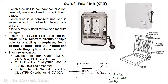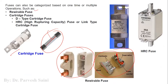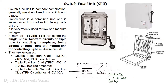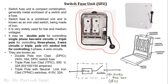Then we have the switch fuse unit. This is an HRC fuse — high rupturing capacity fuse — used in high rating circuits, while cartridge fuse is used in low power rating circuits. A switch fuse unit is basically a combination of fuse and a switch. In this box we have rewireable fuses installed, and we also have a switch — this lever acts as the operating handle.